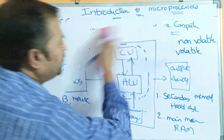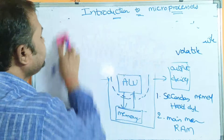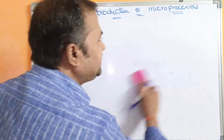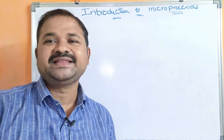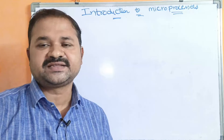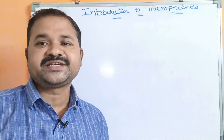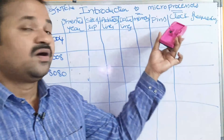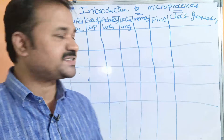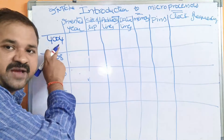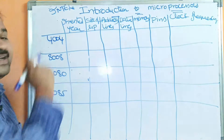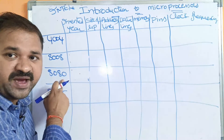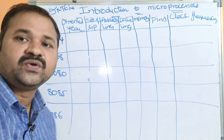Now let us see the history of the microprocessor. Currently in this course, we are discussing about the 8086 microprocessor, so I will discuss the history up to 8086. After that, several microprocessors were developed — I3, I5, I7, I11, and various Pentium processors. We have different Intel microprocessors: the first was 4004, then 8008, then 8080, then 8085, and the last one is 8086.